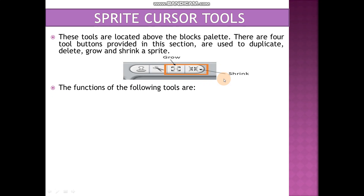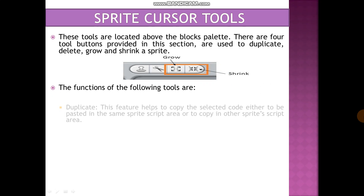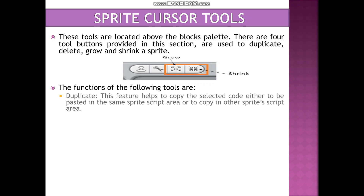The functions of the following tools are as follows. The very first one is duplicate. This feature helps us to copy the selected code either to be pasted in the same Sprite script area or to copy in another Sprite script area. For example, if we are already using a Sprite in the project and we have some instructions on the same Sprite with the same instructions, we need one more script.